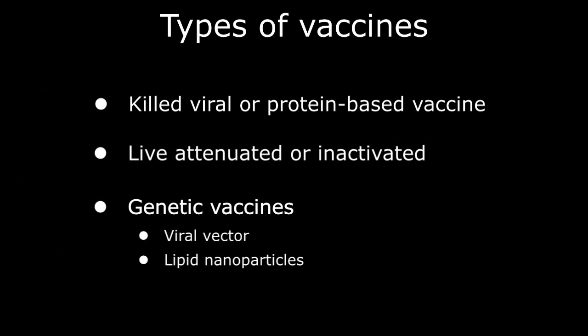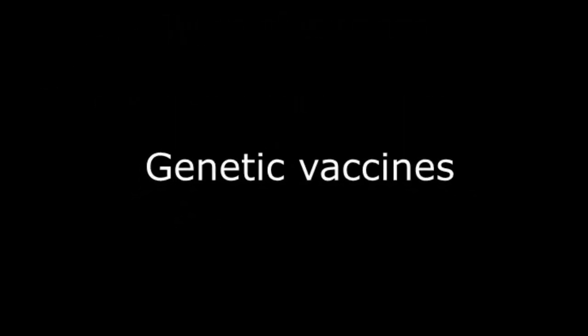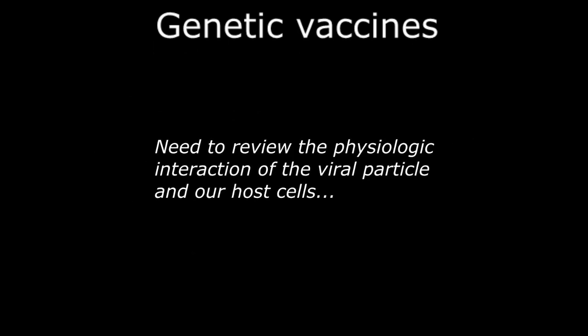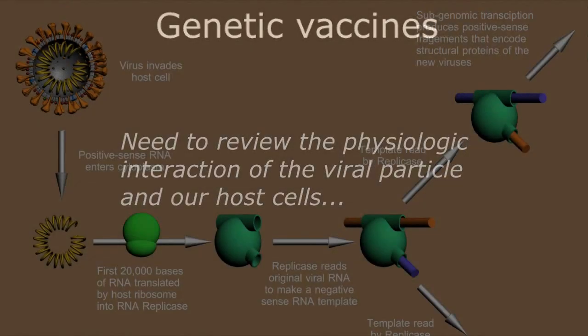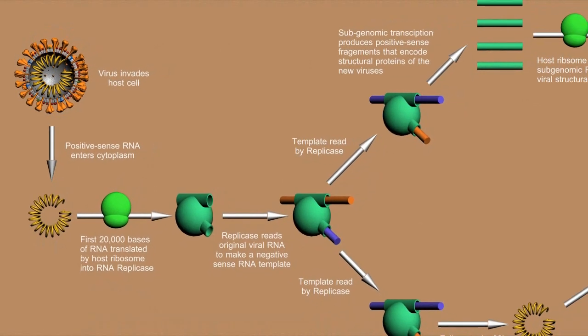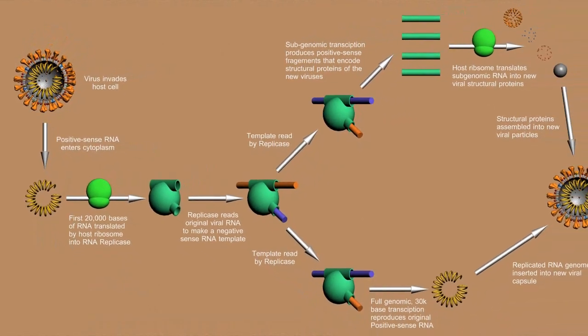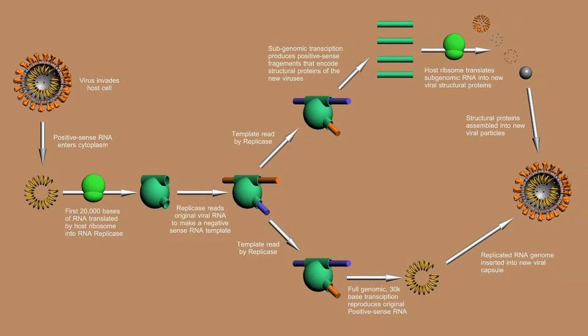To understand the genetic type SARS-CoV-2 vaccines currently completing their clinical trials, we have to review the physiologic interactions of the viral particle and our host cells. This is covered in depth in the video SARS-CoV-2 and COVID-19 on this same YouTube channel, but we'll give a brief two-minute summary here.